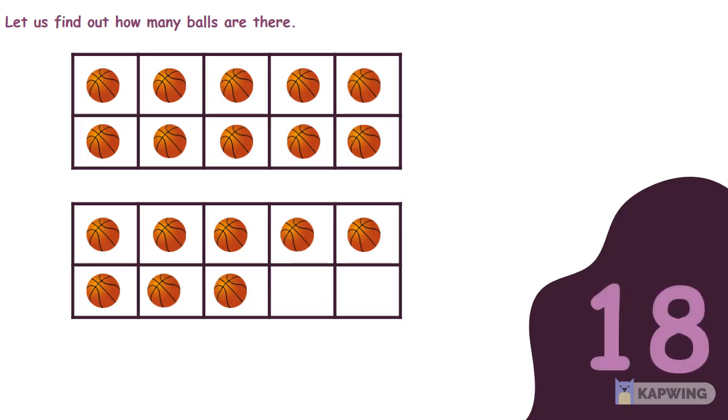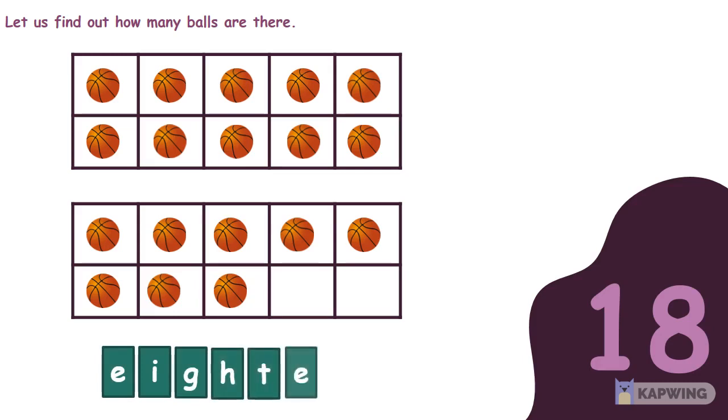You can show 18 as a number. You can also show 18 as a word. The word 18 is spelled as E-I-G-H-T-E-E-N. 10 ones and 8 ones is 18.